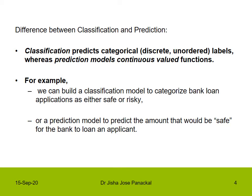We will see what is the difference between classification and prediction. Classification predicts categorical — that is, discrete or unordered — labels, whereas prediction models continuous valued functions. For example, we can build a classification model to categorize bank loan applications as either safe or risky. We can classify applicants into two groups: one group is safe, to whom we can provide a loan, and the other group is identified as risky.